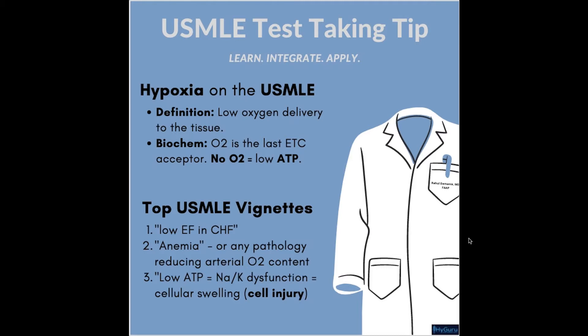Now hypoxia could be caused by hypoxemia. Hypoxemia is low oxygen in the blood. The USMLE wants you to know what are the three components of arterial oxygen in the blood, because if your arterial oxygen in the blood is going to be low, you are going to have hypoxemia that could lead downstream to tissue hypoxia.